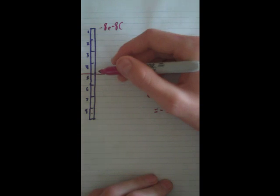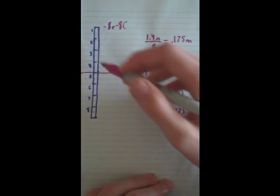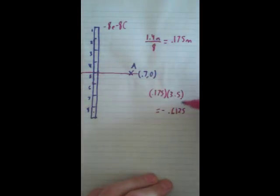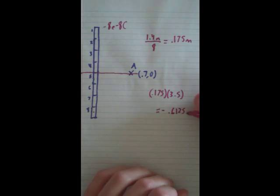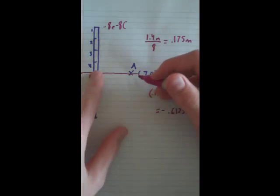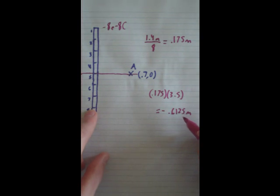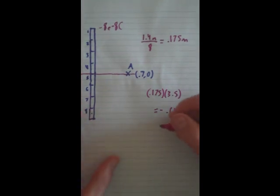And it's going to be negative since we're going below the origin. So if this is the origin, this is where this would be on a graph in the y-axis. So I guess you could say that the point would be 0, negative 0.6125. That makes more sense.